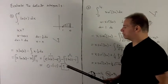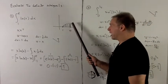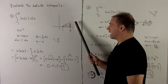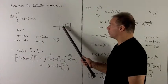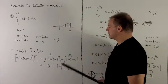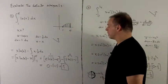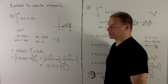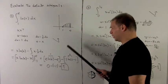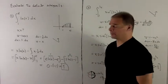Note that if you want an interpretation of this, this is the area under the curve natural log of x between 1 and E, so we would expect a positive number. If you drop the minus sign, you'll get a negative number, and you know that can't be right.